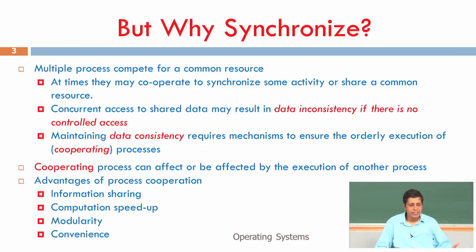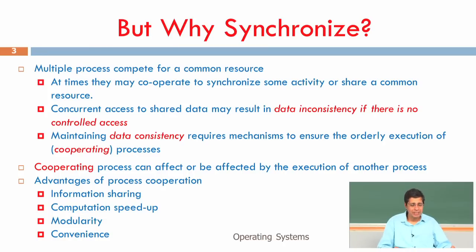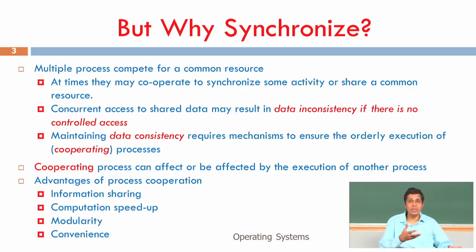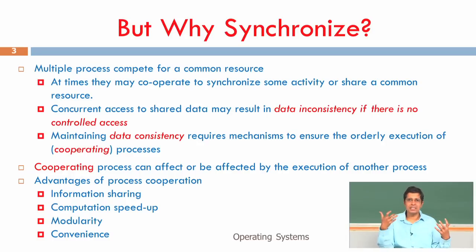Why should we synchronize? Because we are sharing resources. When sharing resources, I need to adhere to some discipline — otherwise the state of the resource becomes inconsistent. We have a cooperating environment where multiple processes try to work together to solve a particular problem. In the context of scheduling, two processes working together allow us to merge the CPU time of one process with the IO time of another, giving more computation speed-up and hardware utilization.